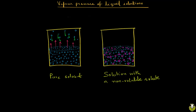Now, instead of just water, if you had sugar dissolved in water — say these pink molecules are sugar molecules — sugar is a non-volatile solute, meaning its own vapor pressure is close to zero. The number of sugar molecules that can escape into the vapor state is so small that, for all practical purposes, the vapor pressure from sugar is essentially zero. So whatever vapor pressure is generated by the solution at a particular temperature comes from the solvent — in this case, the water molecules. What you immediately see is that the number of water molecules per unit area at the surface has decreased, because now they are competing for space with the sugar molecules.